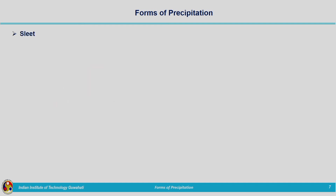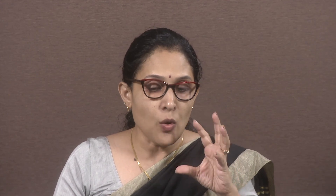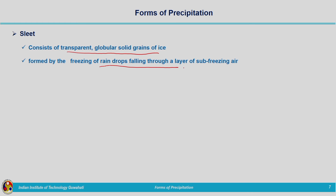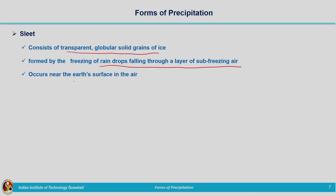The next type of precipitation is termed sleet. Sleet consists of transparent globular solid grains of ice — again a solid form of precipitation. Transparent here means that air is entrapped within the ice drops. It is formed by the freezing of raindrops falling through a layer of sub-freezing air. As the raindrop falls through an air mass at sub-freezing temperature, the raindrops get entrapped with air and are converted to solid form. It occurs near the earth's surface, forming very close to the ground, and these ice coatings on the ground are very harmful.